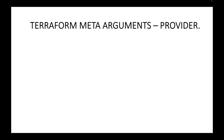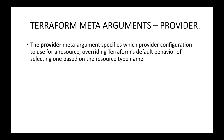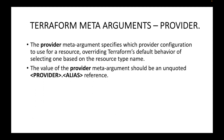In this session we will look at the provider meta argument. The provider meta argument can be used if you want to override the default Terraform configuration based on the resource type that you are creating. By default when writing configuration files we provide one provider block, and that same provider block will be used for all the resources. However if you want to create resources in different regions, or launch instances in multiple regions, we can make use of this provider meta argument to override the default provider configuration. The value of the provider meta argument should be an unquoted provider dot alias reference.